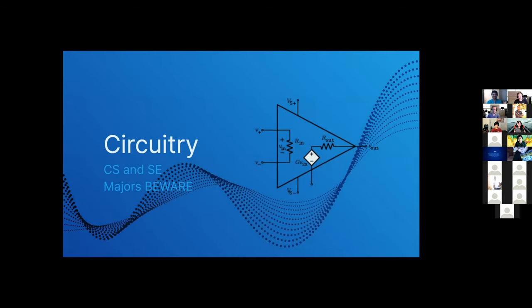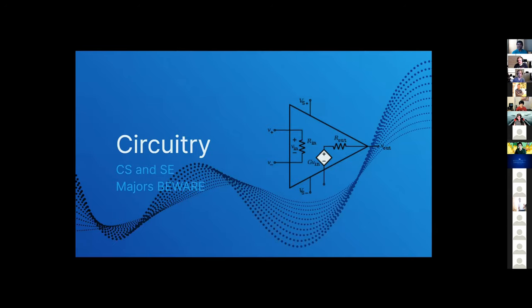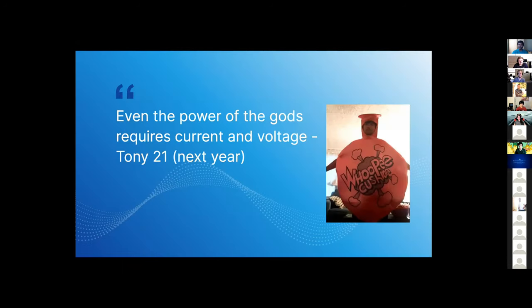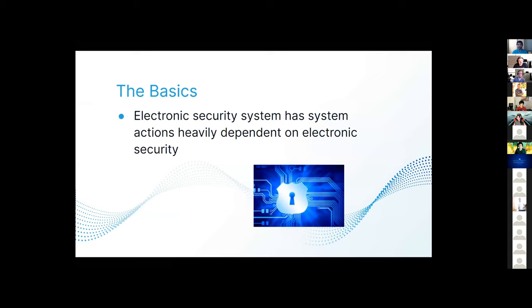And now, CS and SC majors beware. This portion will make some of you scared, maybe cry, pee your pants. The following will be the general basics of how an electronic security system works. Another quote: even the power of the gods requires current and voltage, 2021 next year. These are the basics. You won't be seeing any weird quotes for a while. The basic electronic security system is one where the system's actions are heavily dependent on the electronic circuitry. Some simple examples would be electronic doorbells, electronic mousetraps, keypad door locks, domestic burglar alarms, etc.